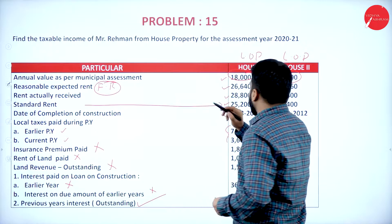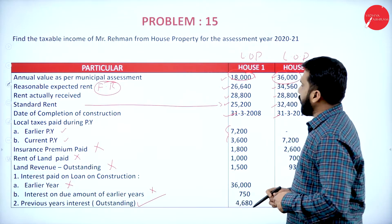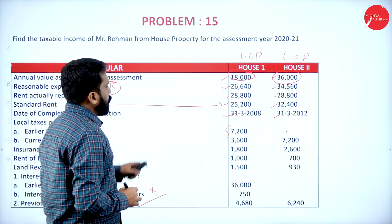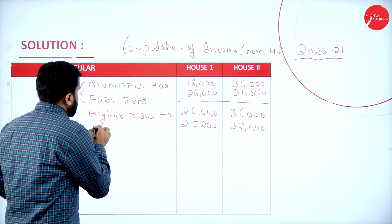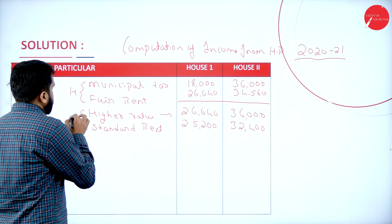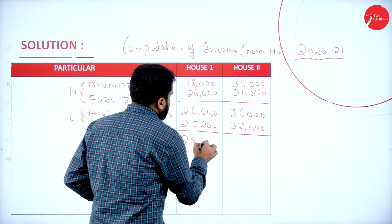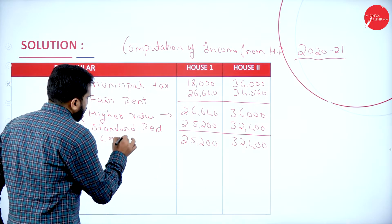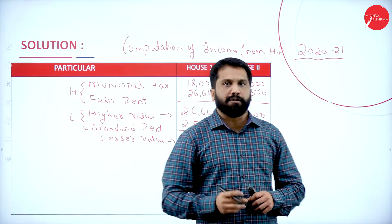Then compare with standard rent. Standard rent is 25,200 and 32,400. We take whichever is less. So the lesser value is 25,200 for house 1 and 32,400 for house 2.